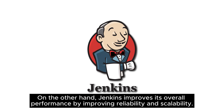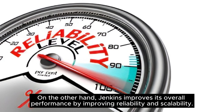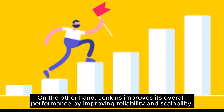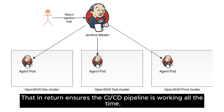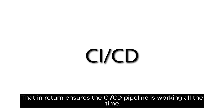On the other hand, Jenkins improves its overall performance by improving reliability and scalability. One of the added advantages of Jenkins with Kubernetes is that it can run on multiple nodes within the cluster, which ensures the CI/CD pipeline is working all the time.